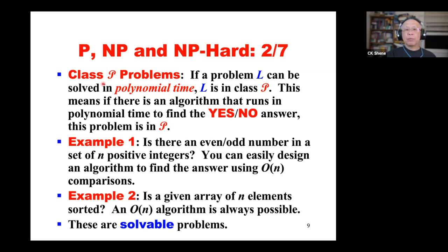These problems are referred to as class P problems — solvable problems for which we can find algorithms in polynomial time. For instance, finding an even or odd number in a set of n positive integers uses order-n comparisons. Checking whether a given array of n elements is sorted can be done by comparing adjacent pairs; if every adjacent pair is in ascending order, the array is sorted. These are solvable in polynomial time.